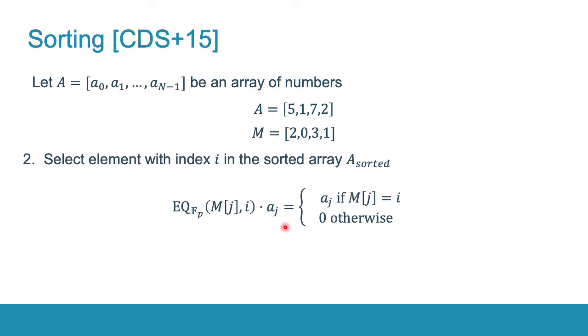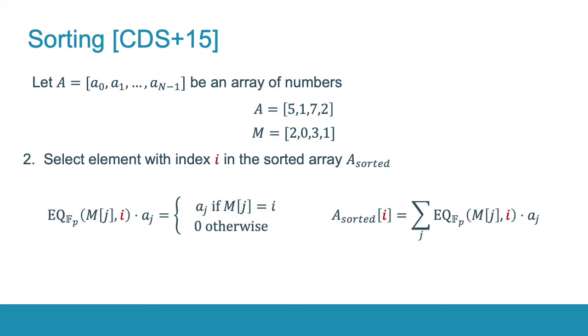And the position of the element AJ in the sorted array is already encoded in the element MJ. Otherwise, this product will be zero. As a result, we can homomorphically compute the i-th element of the sorted array. You can check that this algorithm returns the following array, which is indeed the sorted version of the input array A.